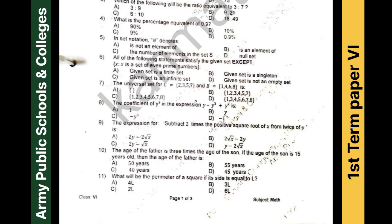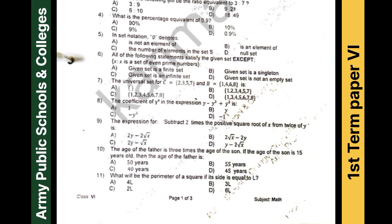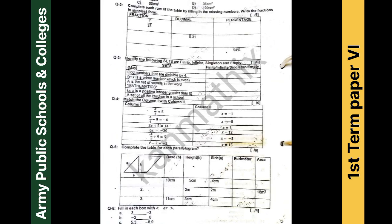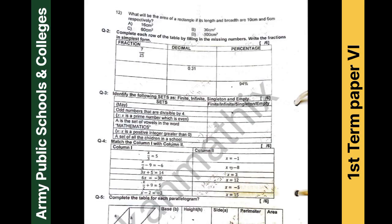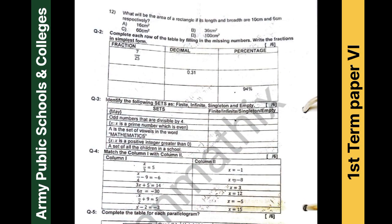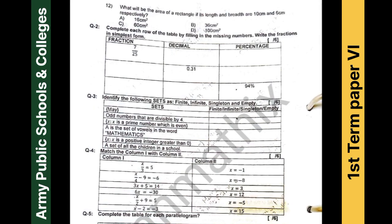MCQs number eight and nine are from exercise 4E, and the tenth MCQ is from 4F. You can take a screenshot, and for the answers you can comment in the comment section. This is page one of three — the paper has a total of three pages. MCQ number 12 is about finding the area of a rectangle, which is from the same chapter.